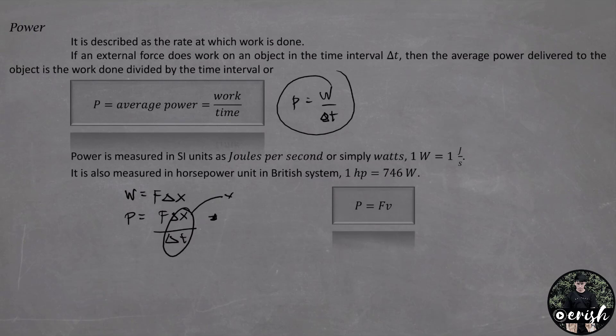And in a more general definition, we call this the instantaneous power and can be written down by this equation. Power can also be defined as the rate at which energy is transformed. And we have another formula for the power, energy transformed divided by the time.